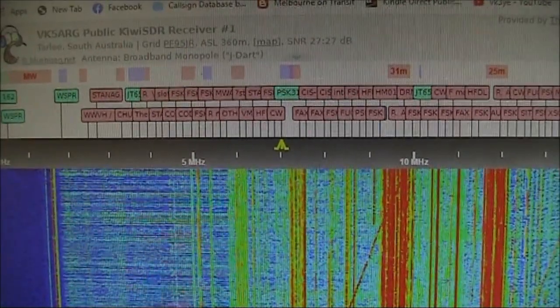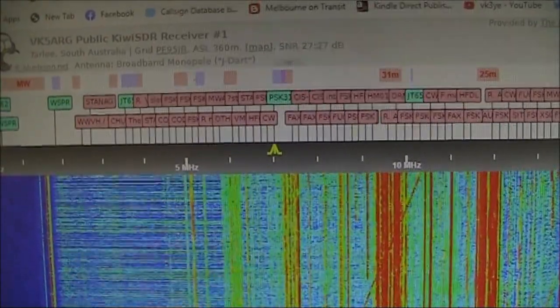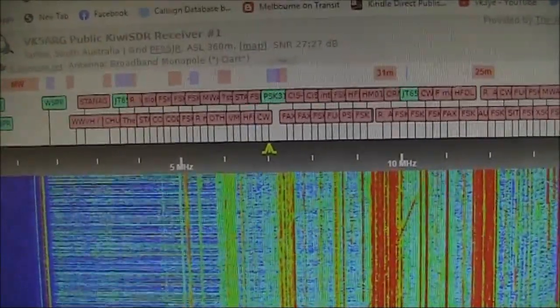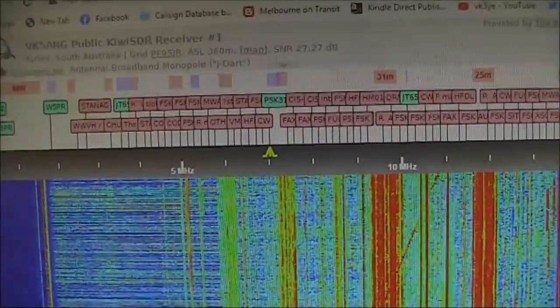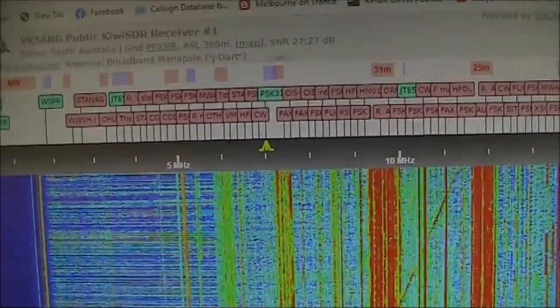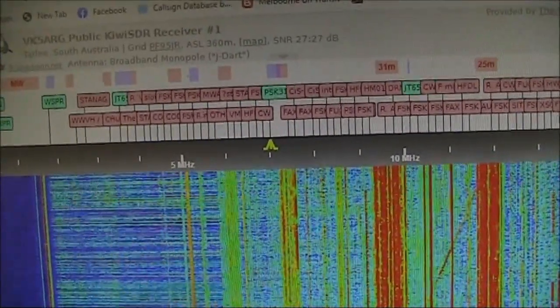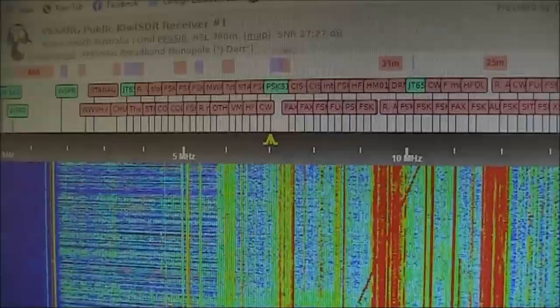I'm using the VK5 ARG SDR. That is west of me, where it's a bit darker. And you can hear some DX CW in the background, though that should fade out later on. That's about 700km away.